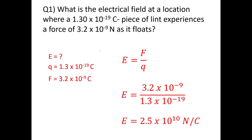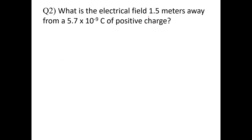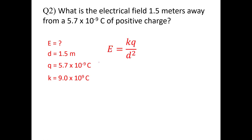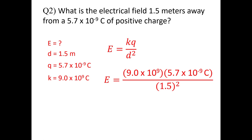Always try these yourself — make a givens list, pause the video, then come back and check. In the next example, we're looking for the electrical field 1.5 meters from a charge of a given Q. Since we have a distance, we use the equation with k: E = kQ/r². Using 9 × 10⁹ for k and plugging in all values, you get 22.8 newton-coulombs as the electrical field.